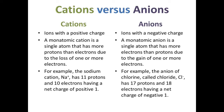Anions are ions with a negative charge. A monatomic anion is a single atom that has more electrons than protons due to the gain of one or more electrons. For example, the anion of chlorine, called chloride, has 17 protons and 18 electrons, thus having a net negative charge of minus 1. Polyatomic anions also have negative charges, and we will discuss those later.